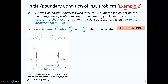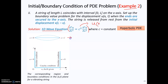Let's try another example. In this case, you have a string with length equal to L that is fixed at both ends. This problem is modeled by the 1D wave equation, which is a hyperbolic PDE. You are going to find the displacement U with respect to x from 0 to L and with respect to time. The boundary condition at x equal to 0 for any time gives displacement equal to 0, and since the string is fixed at both ends, the displacement at x equal to L for any time is also equal to 0.